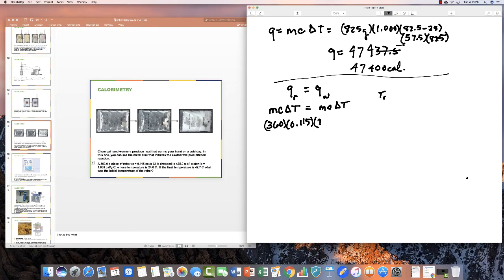which is 42.7, has to equal the mass of the water, which is 425 times the specific heat of the water times the initial temperature of the water, which is 24. I'm sorry, it's final minus initial. So the final temperature of the water, which is 42.7 minus 24.0, and this has to be 42.7 minus TR.